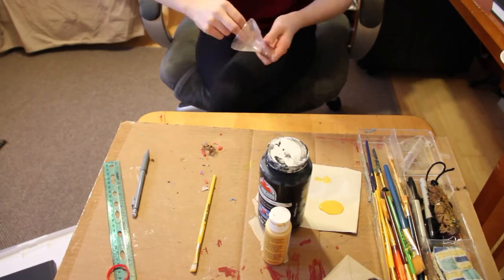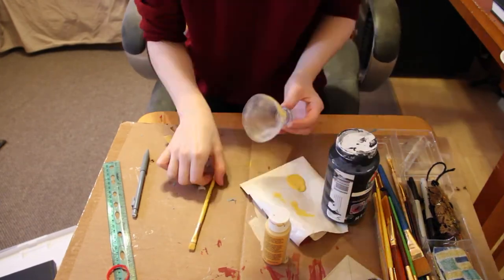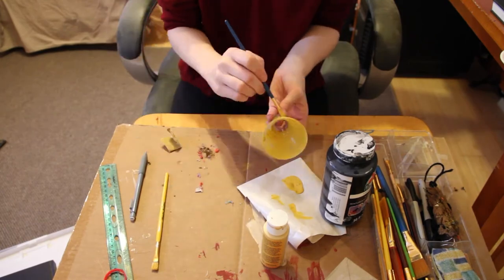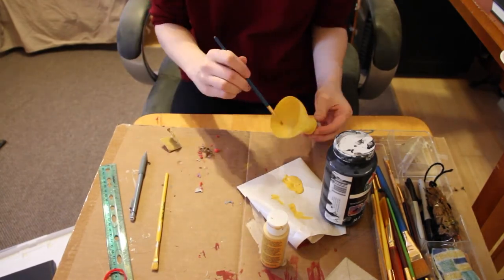I sanded down the pop bottle just so that the yellow or gold acrylic paint would stick better. Otherwise, on that kind of surface, it just doesn't stick. It just kind of slides everywhere.